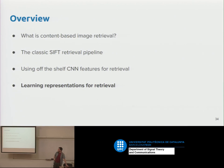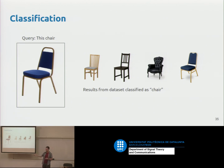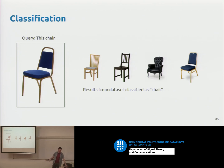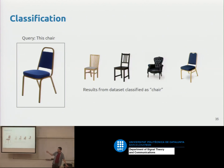Now I want to talk about learning representations for retrieval. What we've done so far is take a pre-trained convolutional network and use it for retrieval, which works better than expected. But there's something slightly wrong: a network trained for classification has been trained to be invariant to differences within a class — to make all chairs look alike. In a retrieval context, you don't want all chairs to get the same similarity score. You want some chairs to be more similar to each other than others. So can we do better by training specifically for retrieval?